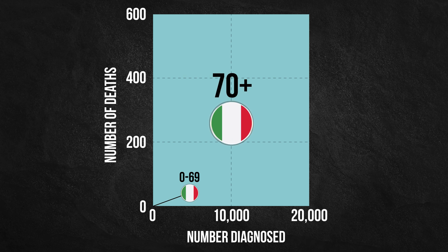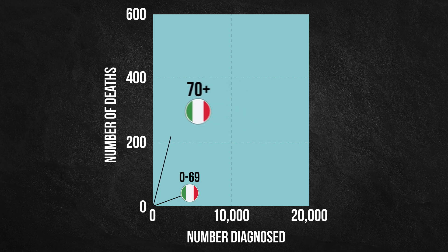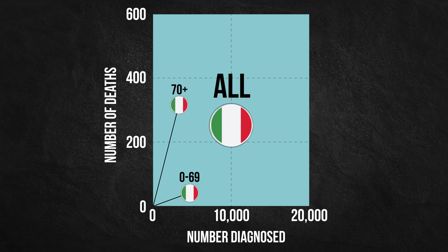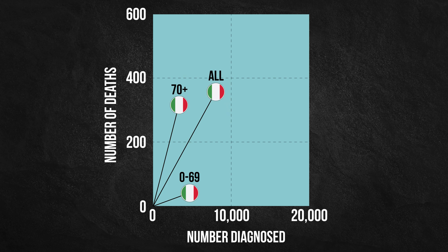For the 70-and-above group in Italy, we get that vector, and for the combined group in Italy, we get that vector, which is the sum of the other two vectors. The slope of this vector corresponds to the total case fatality rate in Italy.